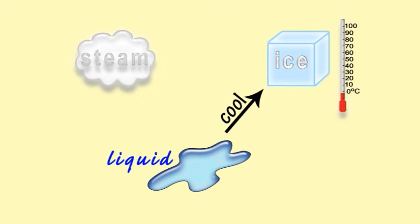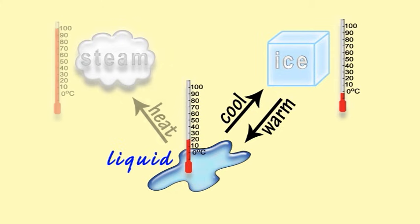When water is cooled down below zero degrees Celsius, it forms solid ice. When water is warmed to above zero degrees Celsius, it melts into liquid water. And when it is heated to 100 degrees Celsius, it turns into the gas called steam.